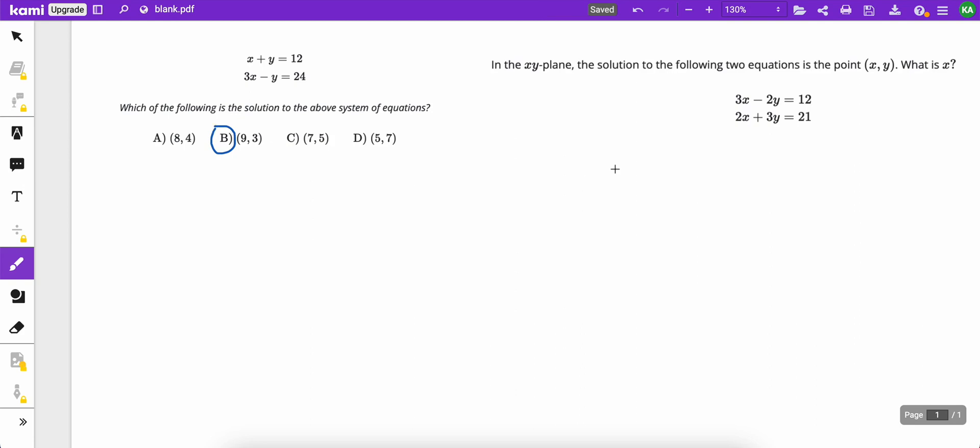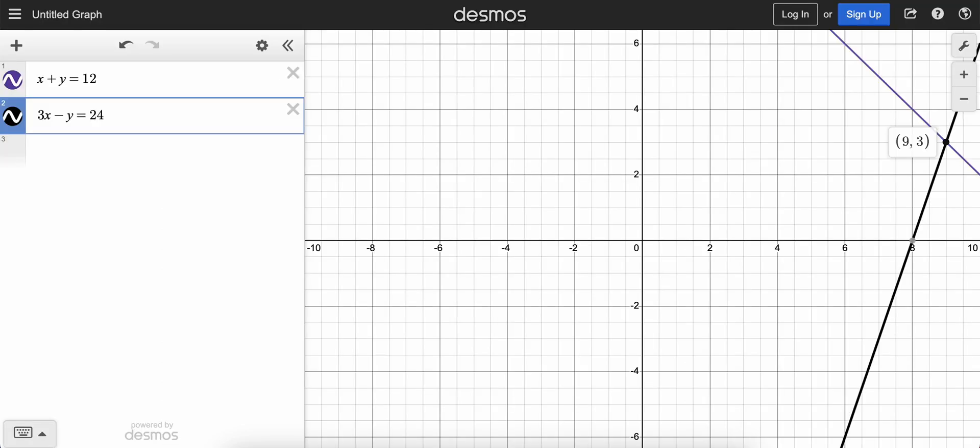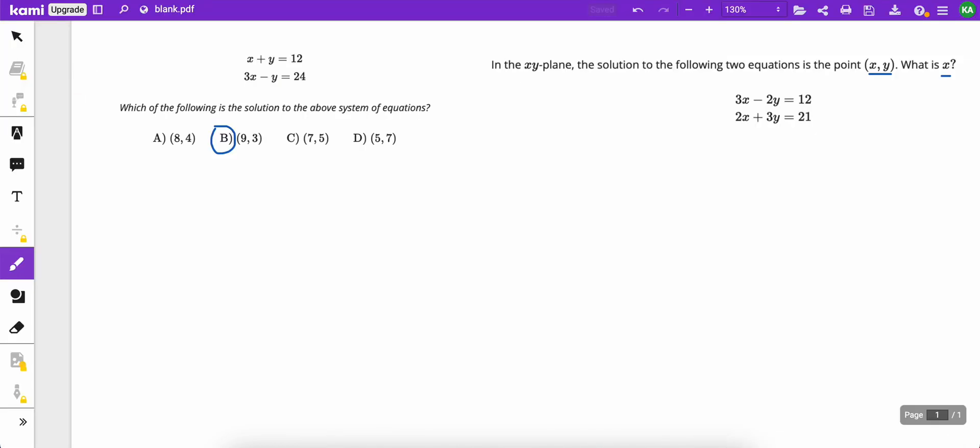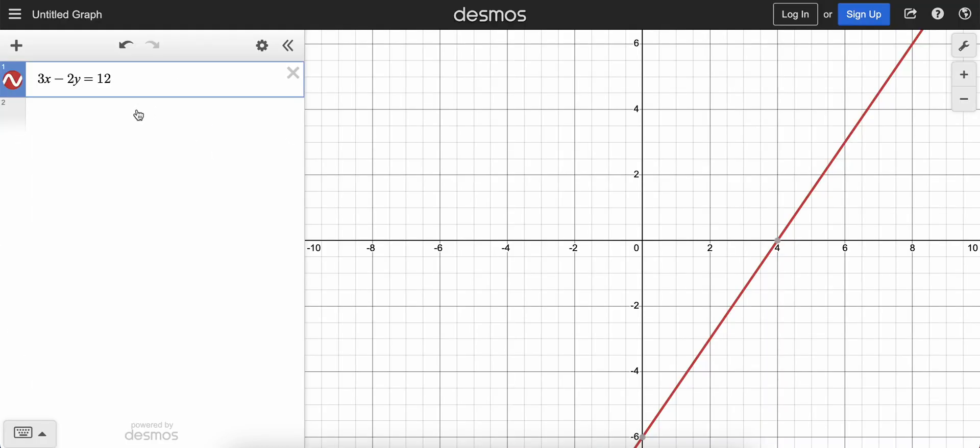And then the second one, it's a little different. They are asking about the x value of the intersection point. So that's all we need to look for here. Same thing, 3x minus 2y equals 12. Let's get rid of these. And then the second one, 2x plus 3y equals 21.